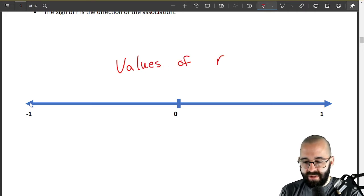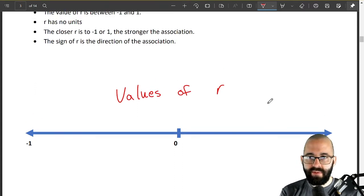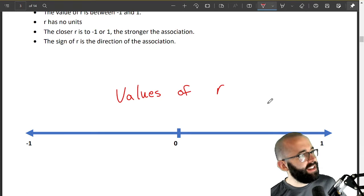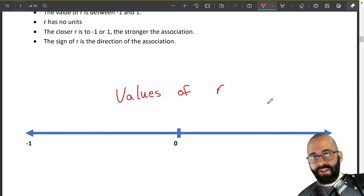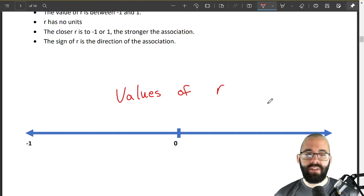There are no units for r, so you'll be happy about that. I always ask about, oh what's the mean and standard deviation, include units in your answer. Well there are no units for r, it's a coefficient, all right, it's a number that we're multiplying things by. And the closer r is to negative one or one, the stronger the association.